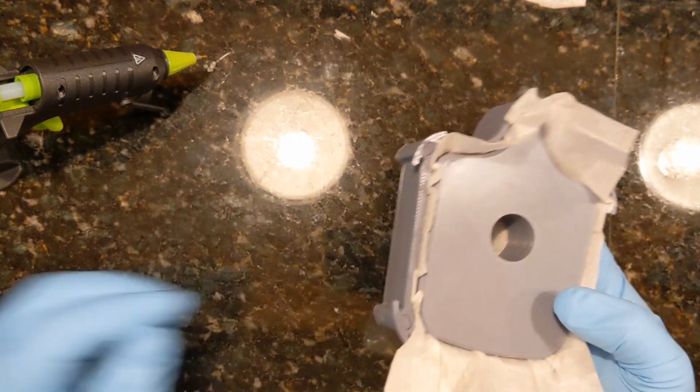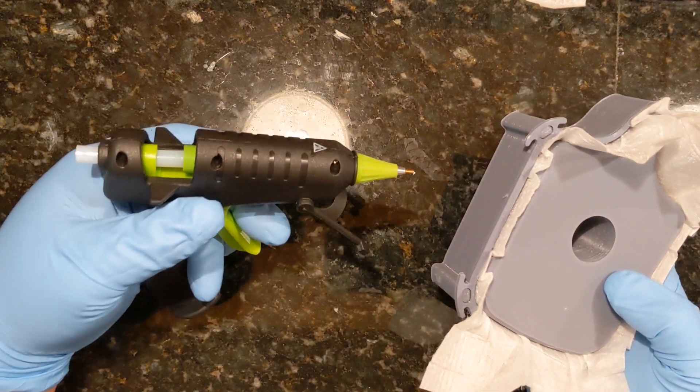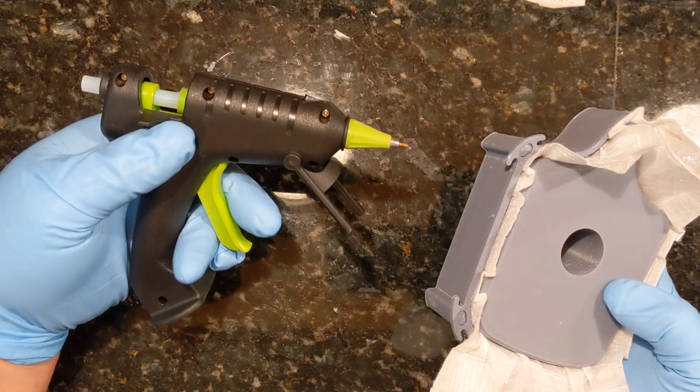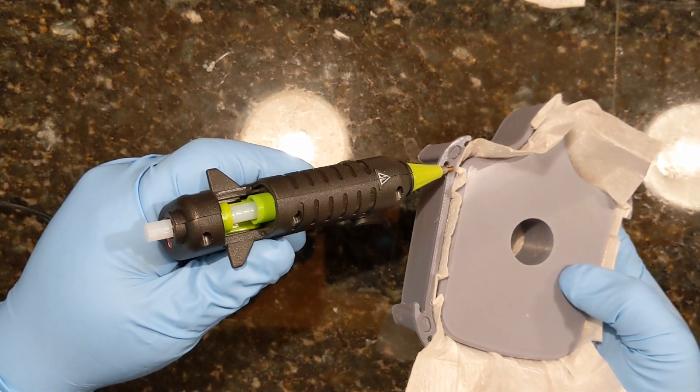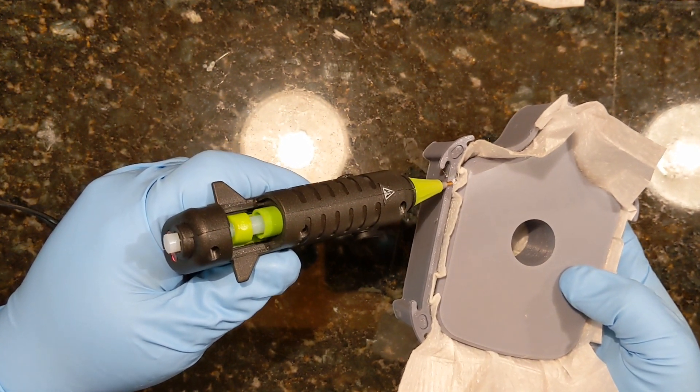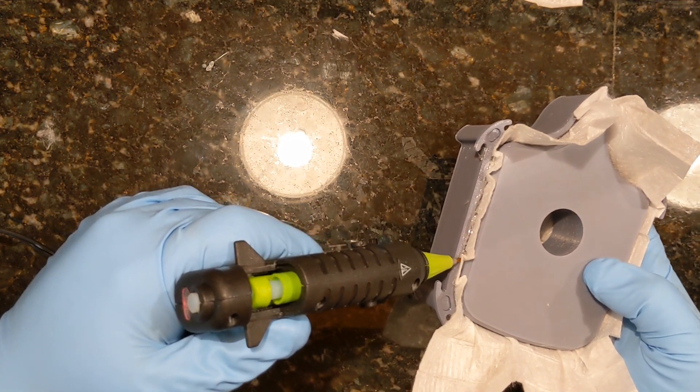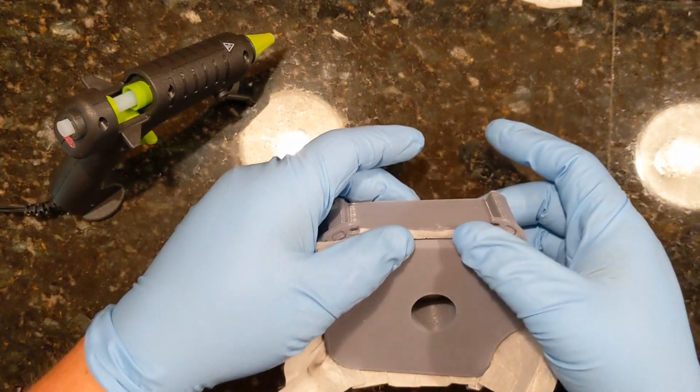And the next thing is to get a hot glue gun. I see online some people are using cold or low temperature or high temperature. This is actually a high temperature hot glue gun with a fine tip. And all you have to do is apply hot glue on the frame. And you can see I'm not the best hot gluer and I'll apply it on one side, form it over.